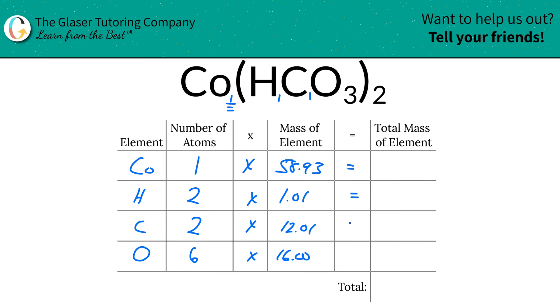To find the total mass of each element in the compound, simply multiply the row across. This is the mass of one cobalt, and since I only have one cobalt, I take one and multiply it by the mass, which gives us 58.93.